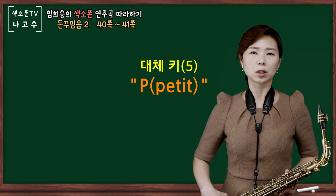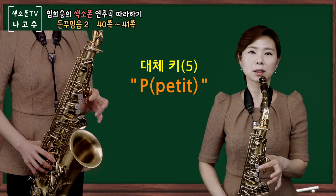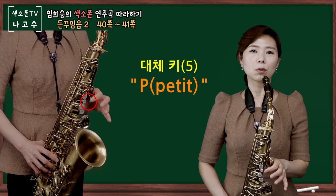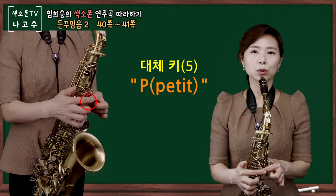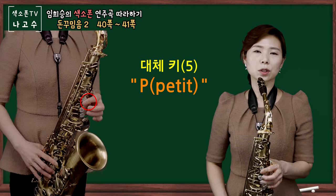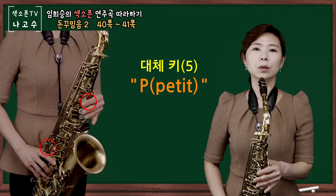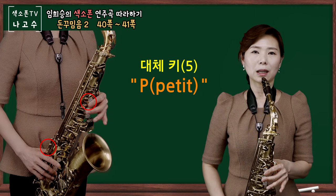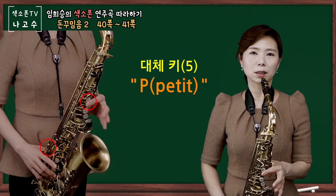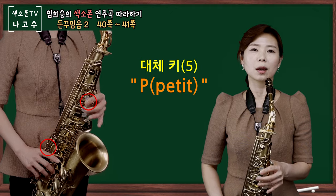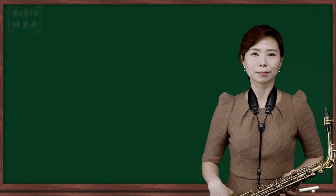F 메이저를 보시면 뿌띠키를 이용해서 비스라고 하는 키죠. C와 비스, 혹은 뿌띠키라고 얘기하기도 합니다. 두 키를 동시에 닫고 C 플랫을 표현해 주시고, 시, 도, 시, 라, 시 이렇게 해주시면 되겠습니다. 이렇게 대체 키를 살펴보았습니다.